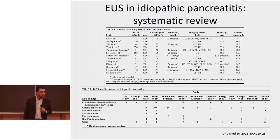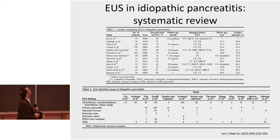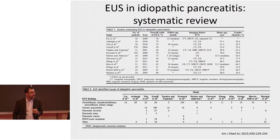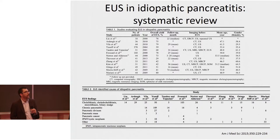What is the diagnostic yield of EUS after idiopathic pancreatitis, or pancreatitis of unknown cause? This is a systematic review of 13 studies in which between 18 and 370 patients were included. The diagnostic yield varied from 41% to 80%. The most common cause of pancreatitis identified was CBD stones or microlithiasis, followed by chronic pancreatitis, pancreas divisum, and focal pancreatic lesions including pancreatic cancer.